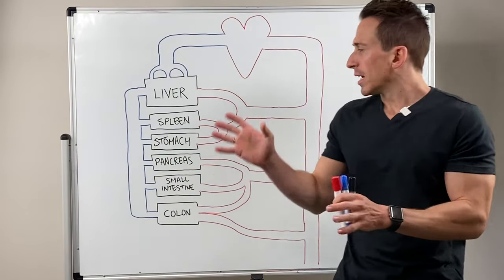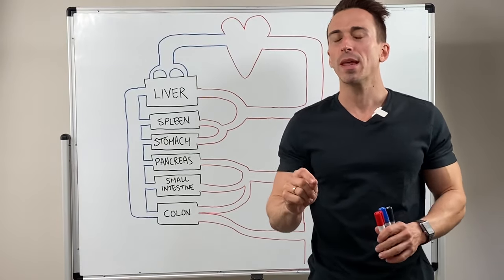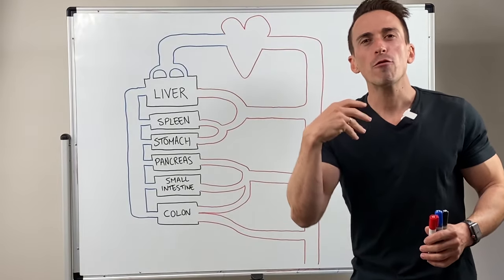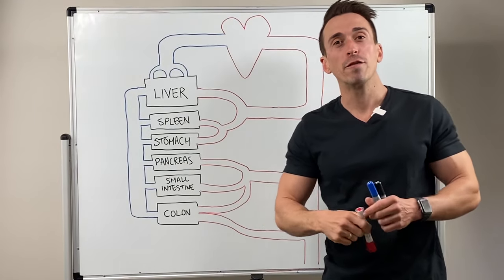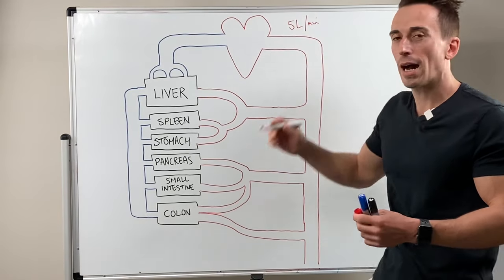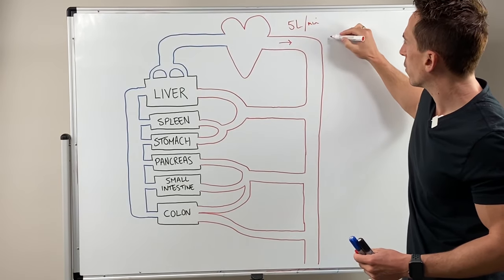Now first thing is, this blood supply is also known as the splanchnic circulation and what we need to do is first begin at the heart. We know that every minute the heart ejects around about five liters of blood, five liters per minute which we call our cardiac output. This is obviously coming out of the aorta.